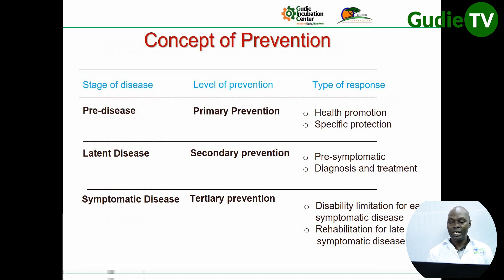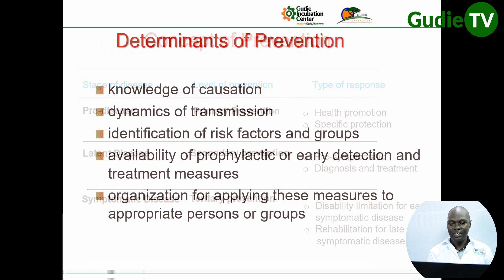At the tertiary prevention level, the responses are disability limitation for early symptomatic disease, and rehabilitation for late symptomatic disease.